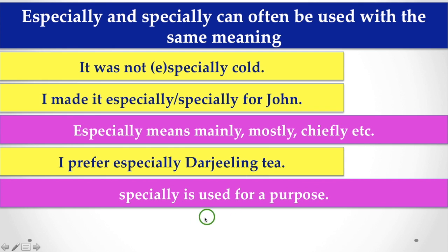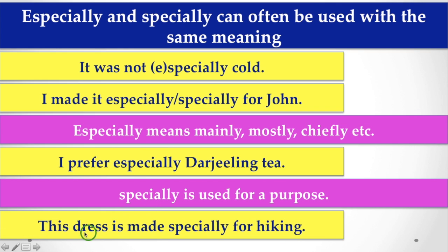But specially is used for a purpose. When we are talking about a purpose we use specially instead of especially. Let's see the example here. This dress is made specially for hiking. So here hiking is the purpose and the dress is made for hiking. So here specially refers to a particular purpose.